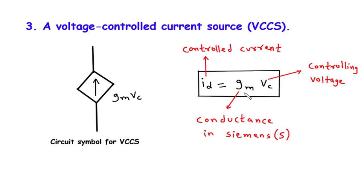So, by adjusting the conductance, we can control the amount of current flowing through the VCCS. Now, let's understand this concept using an analogy. Think of the VCCS as a faucet and the controlling voltage, VC, as the handle. When you turn the handle, you control the flow of water. Similarly, in a VCCS, when we adjust the controlling voltage, we control the flow of current.